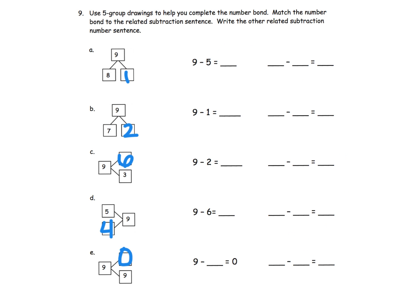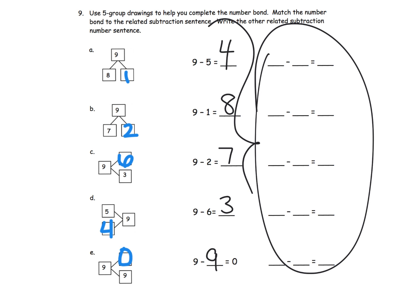Over here is where you're going to be filling in your gaps for your number sentences. So we've got nine minus five is four. Nine minus one is eight. Nine minus two is seven. Nine minus six is three. And here's that tricky one. Nine minus nine is zero. Here you've got your partner number sentences and then you can begin the process of pairing up your matching number bond with the number sentences.